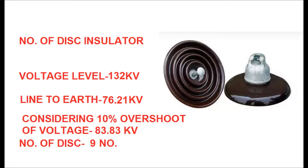For the 132 kV system, the line-to-line voltage is 132 kV. The line-to-earth voltage is 132 divided by √3, equal to 76.21 kV. Considering 10% overvoltage: 76.21 × 1.1 = 83.83 kV. Dividing 83.83 by 11 gives approximately 8. Adding 1 for safety margin gives 9 discs for suspension type string and 10 discs for tension type string in a 132 kV system.